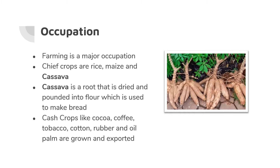Cassava is dried and made into flour — like atta — and then made into bread or roti. The cash crops grown and exported here are cocoa, coffee, tobacco, cotton, rubber, and oil palm.